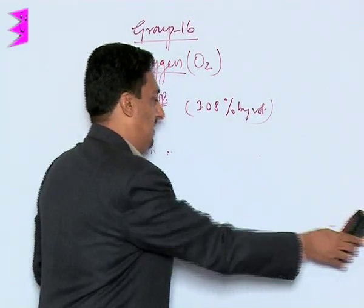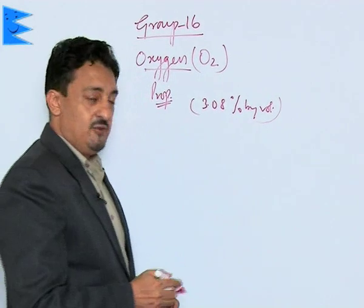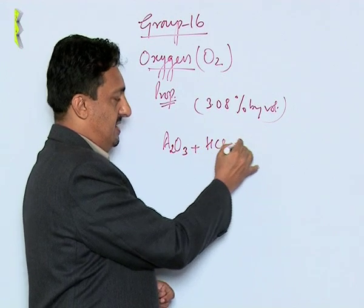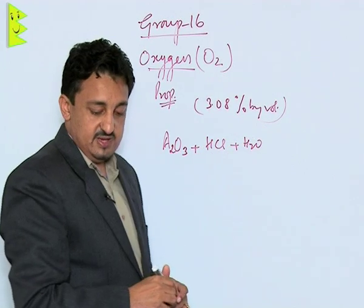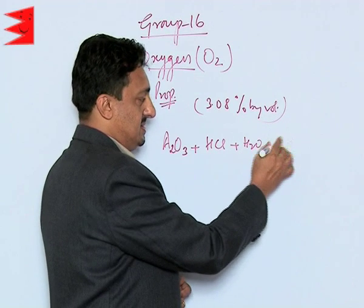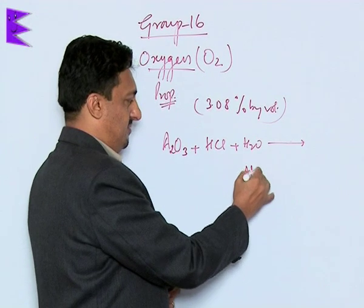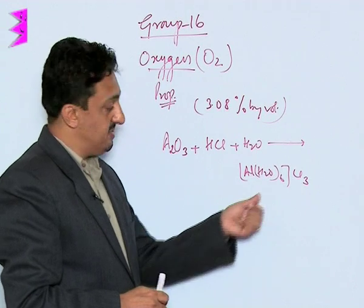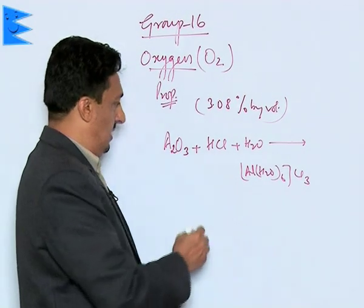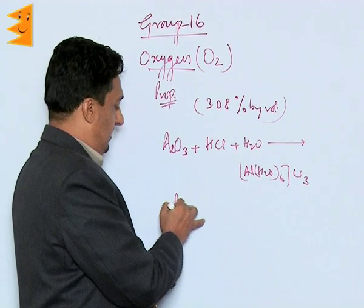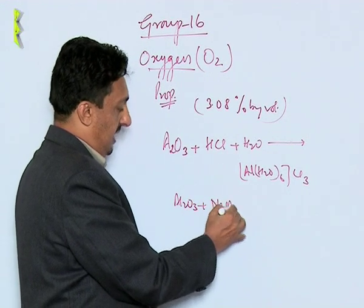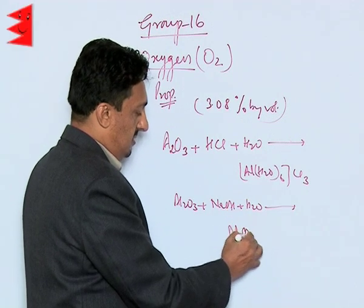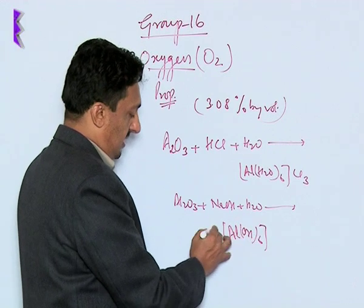Now let us study two examples to know the amphoteric nature of aluminum oxide. When this Al2O3 is reacted with HCl in presence of water, what we find is that it forms a complex like this one: [Al(H2O)6]Cl3. In a very similar way, when this Al2O3 is reacted with NaOH in presence of water, it forms [Al(OH)6]3- and Na+ is outside.